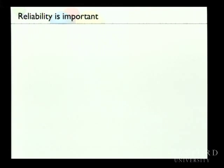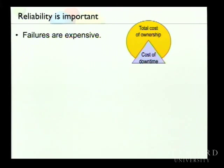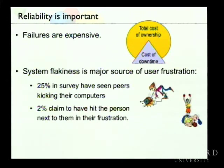System reliability is important for different reasons. If you're a company, failures are expensive. A large fraction of the total cost of ownership goes into protecting against failures and the actual cost of downtime. There's also a user study from a few years ago — first mentioned in a Berkeley paper — which found that 25% of college students in Great Britain have seen peers kicking their computers, and 2% claimed they've hit the person next to them out of frustration. So whatever motivation works for you, system reliability is clearly important.